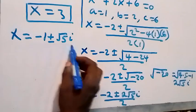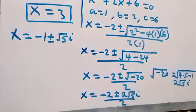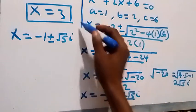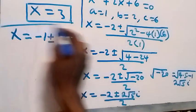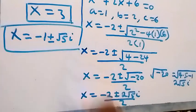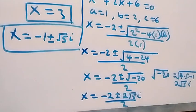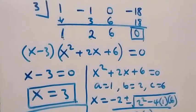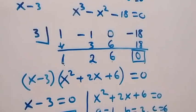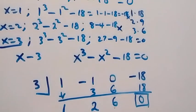So we have two complex solutions x = -1 + √5·i and x = -1 - √5·i, and one real solution x = 3. These are all the solutions to the given problem. You can check to confirm they satisfy the original equation. Thank you for watching — subscribe for more exciting videos, turn on the notification bell, share this video, give it a thumbs up, and put your comments in the comment section.